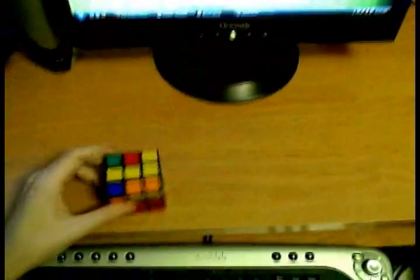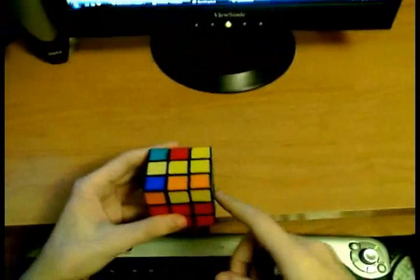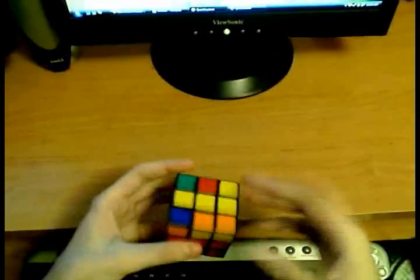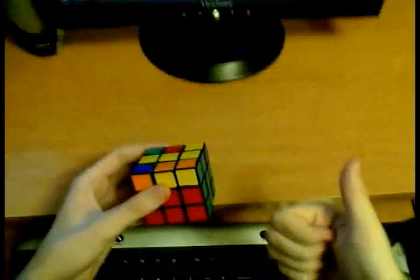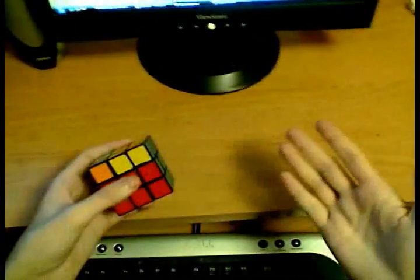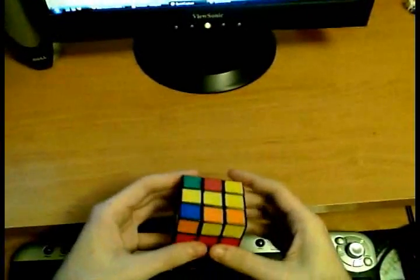Okay, so let's look at edge orientation first. After you finish the first two layers, there can only be a few things that happen with the edges. You can have zero edges correctly oriented, two edges correctly oriented, or four edges correctly oriented. If you have four edges correctly oriented, you are done.